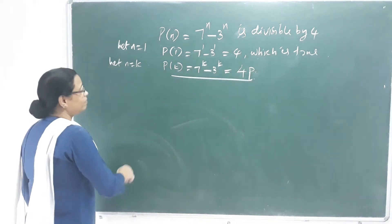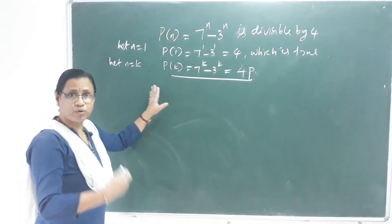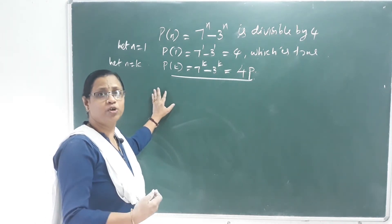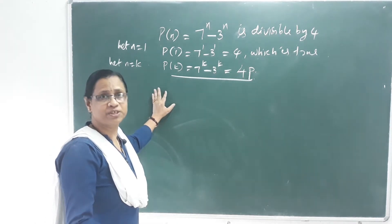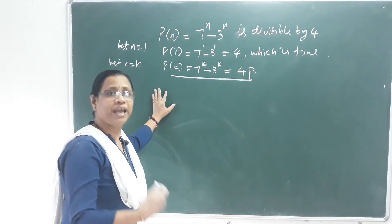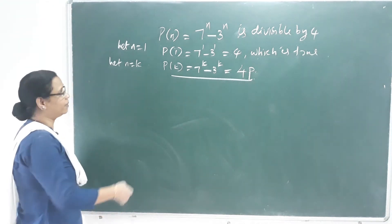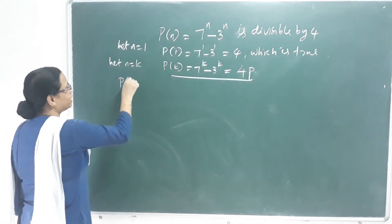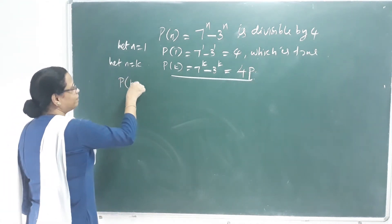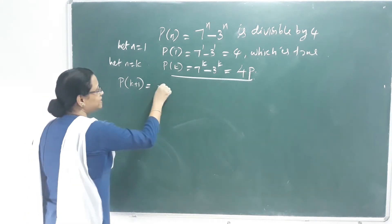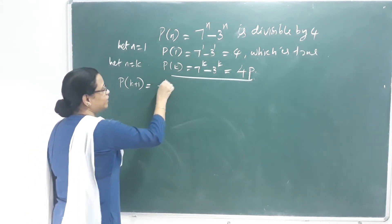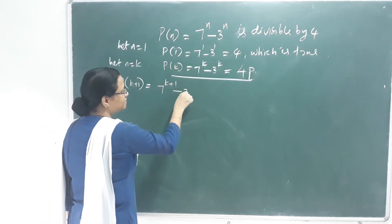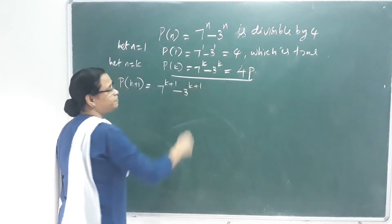We shall prove that P of N is true for n equal to k plus 1. P of k plus 1 is equal to 7 raised to k plus 1 minus 3 raised to k plus 1.